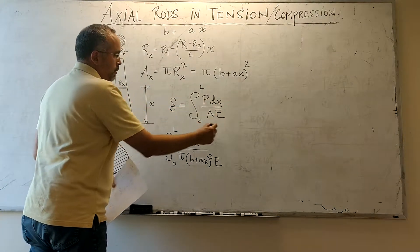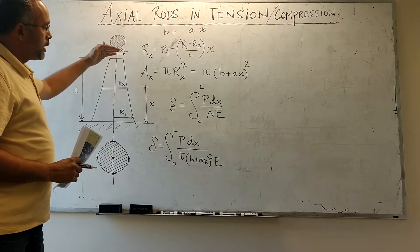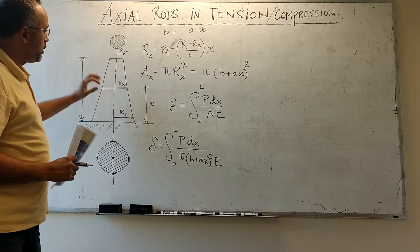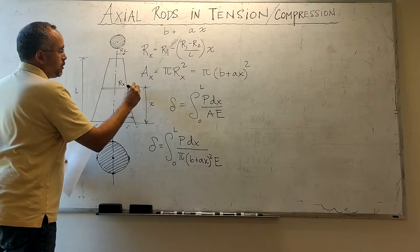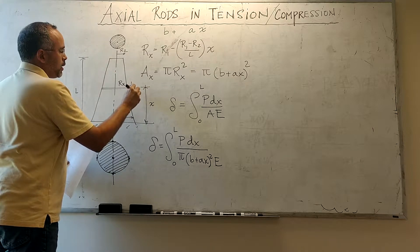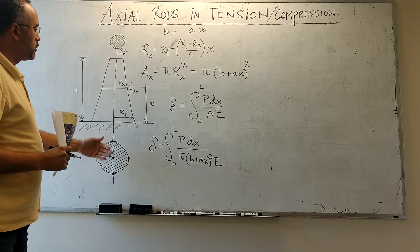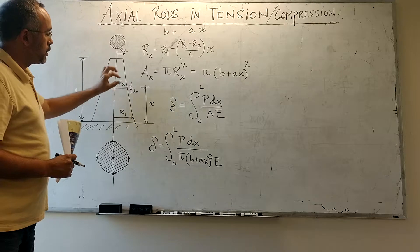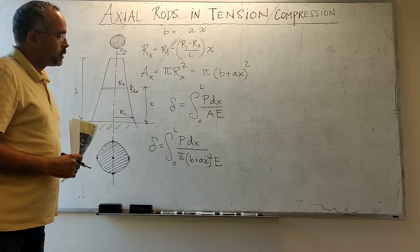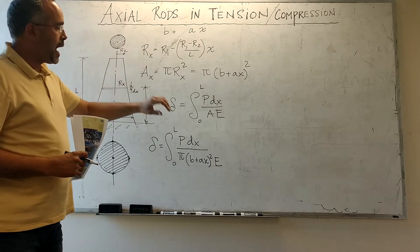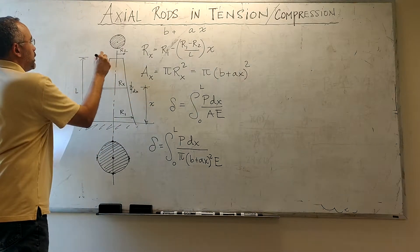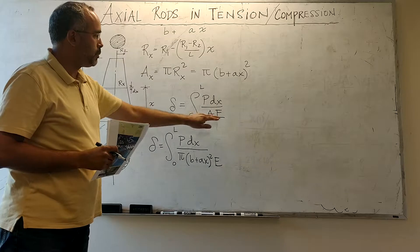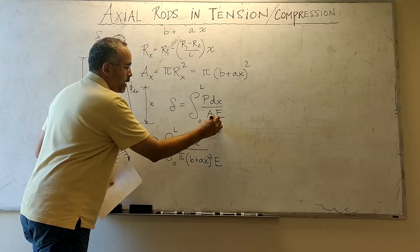As we have discussed in a previous video, this problem can be seen as an infinite number of axial rods of differential length subject to the same load — basically axial rods in series. We know that when rods are in series the deformation of each rod adds to the total deformation, so the total deformation is going to be the sum of P dx divided by AE.